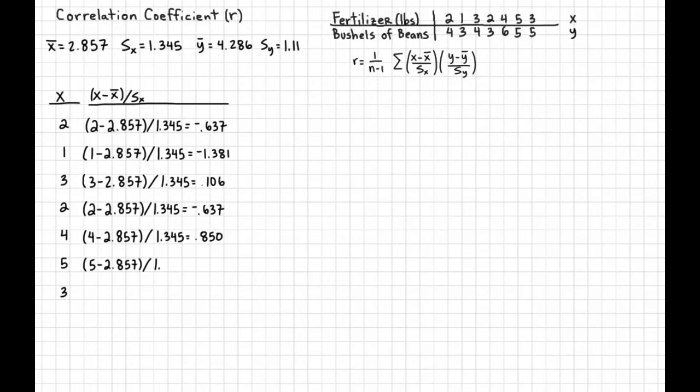Let's do the data point 5. So 5 take away 2.857 and then divide that by 1.345 gives you 1.59. And then the last data set, which we already calculated before but we need to do it again, is going to give me an answer of 0.106. Now, if we look closely to our formula, we have done this piece of the puzzle. Now, we need to do this piece.